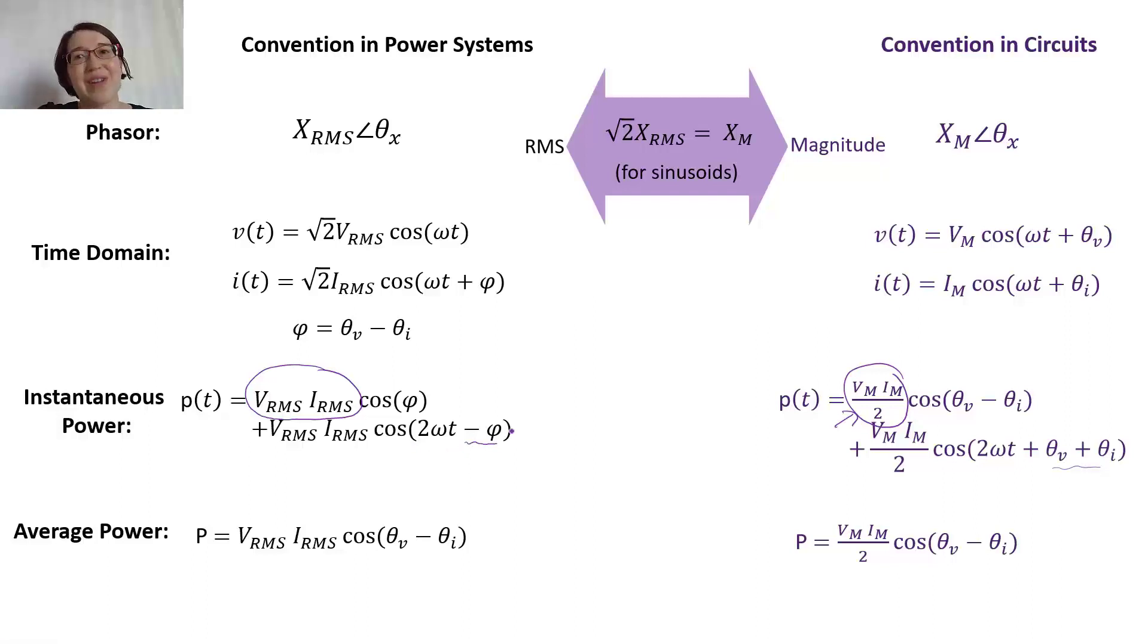But wherever you start from, you can use the appropriate equation. And usually what we care about anyway is average power. So if you look at here, the average power, the phases, the subtraction and the phases ends up being the same between the two, so it's theta V minus theta I. But the first term is what you have to look out for.